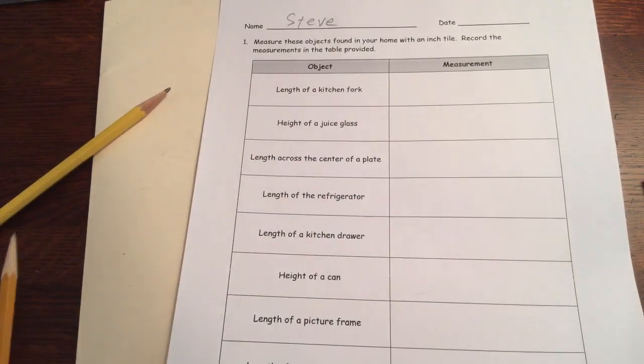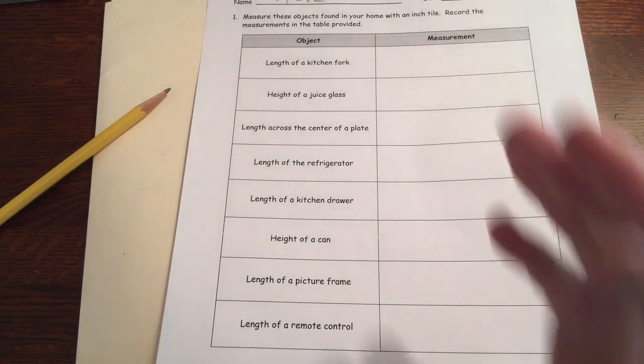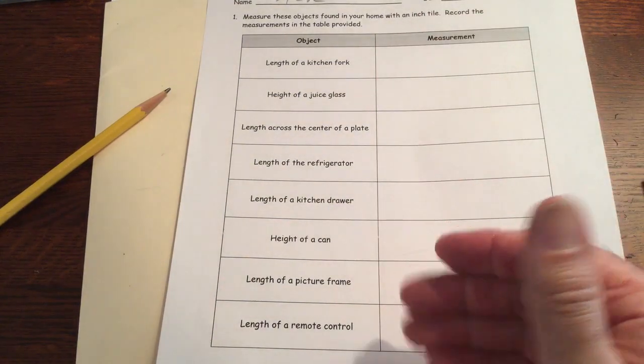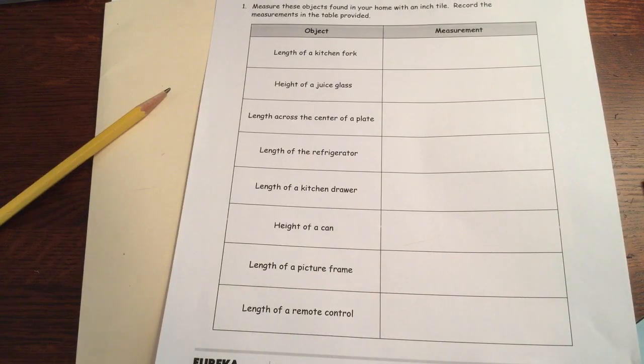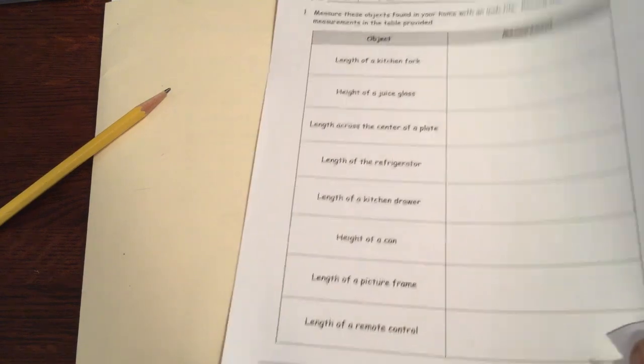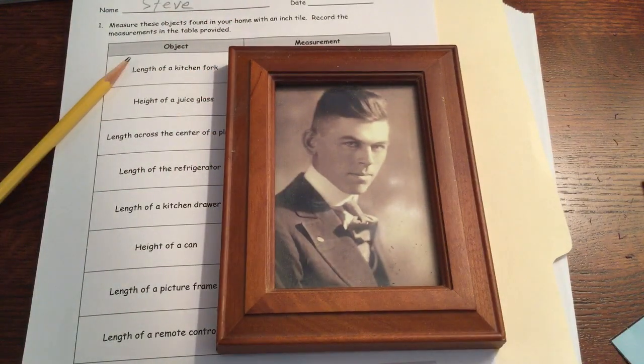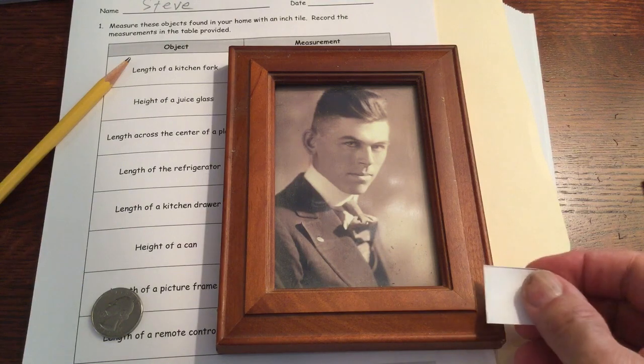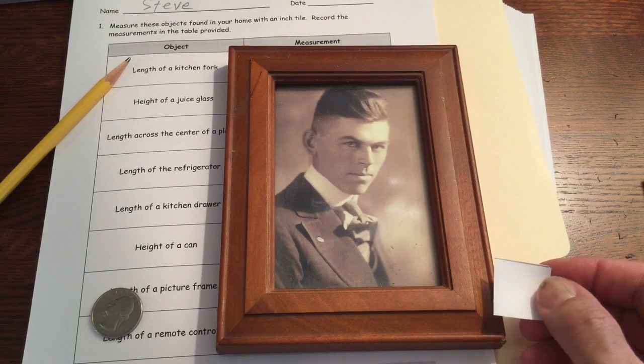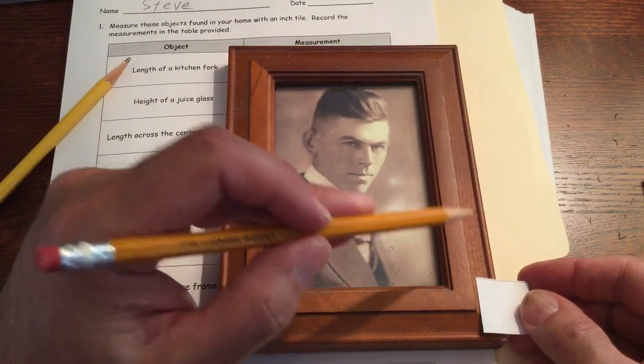So here's a list of things that you have to measure. And I'm not going to measure all these things and write them down, because everybody's stuff is going to be different. But I'm just going to pick one of them, the length of a picture frame. Do yourself a favor and pick a small picture frame. So I'm going to show you first with a square tile and then trying it with a quarter. And I'll show you why the square tile is better than the quarter. But if a quarter is what you got, then use the quarter.